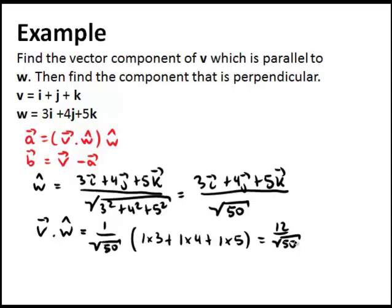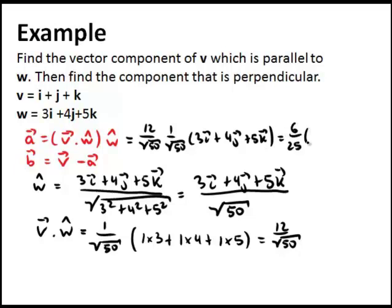Now putting this all together, we now have the dot product here. We have to multiply this by the unit vector. That means we have 12 divided by the square root of 50 times the unit vector itself again, 1 divided by the square root of 50 times 3i plus 4j plus 5k. That simplifies to 6 divided by 25 times 3i plus 4j plus 5k. Now this is a.